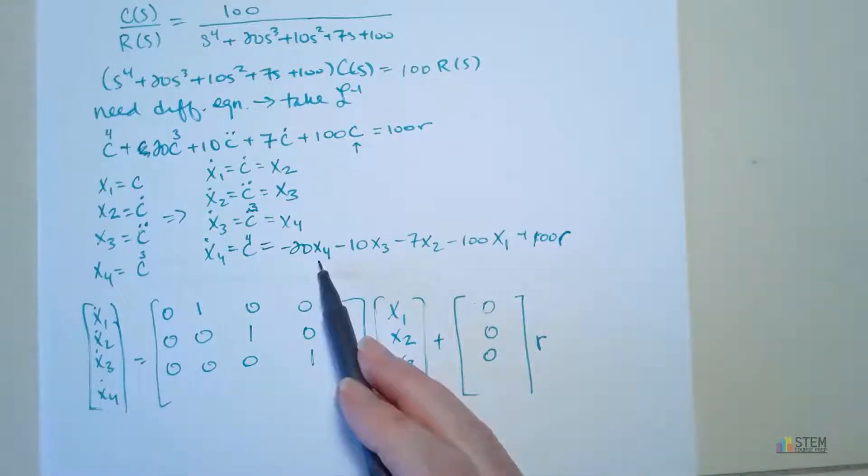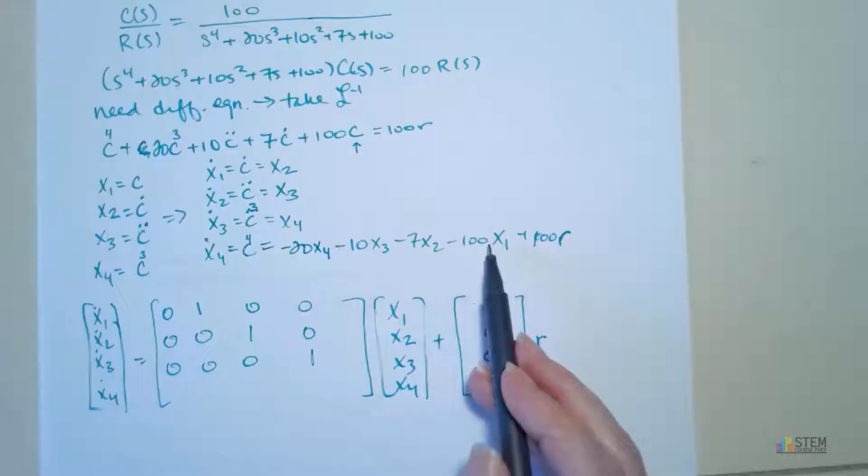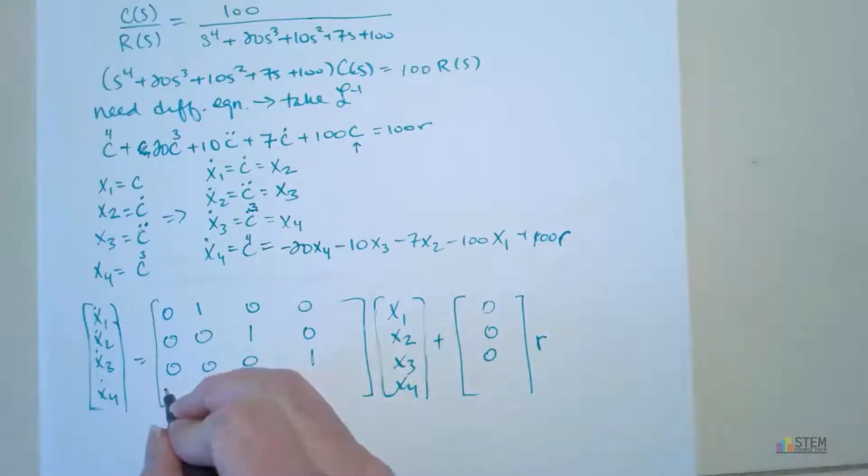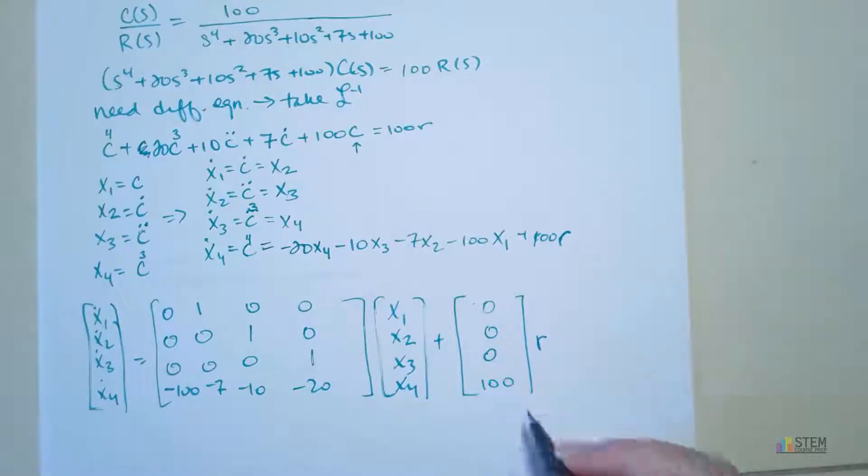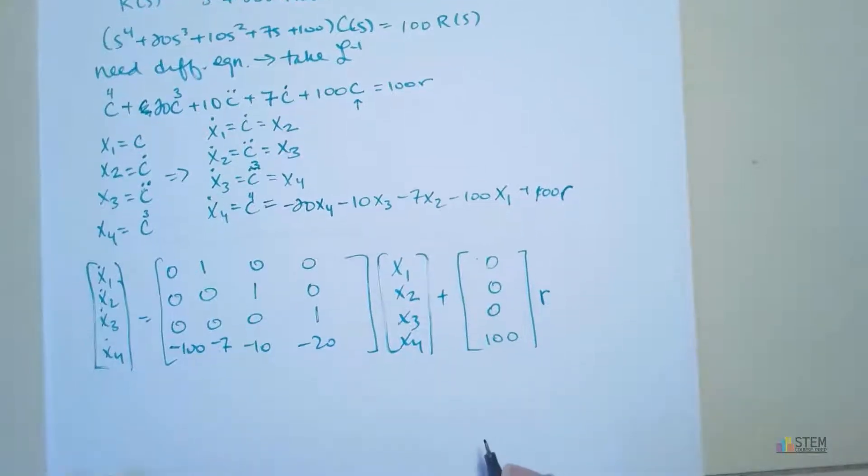Finally, we pull out all of these coefficients here. And notice I have them written backwards. This is x4, so we need to start over here. We'll have negative 100, negative 7, negative 10, negative 20. And now this one, we've got 100R, so we need to put 100 right here. So that part's done.